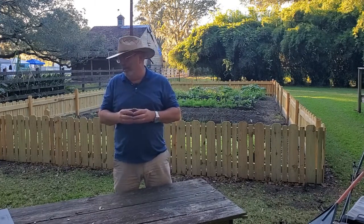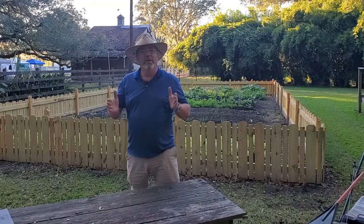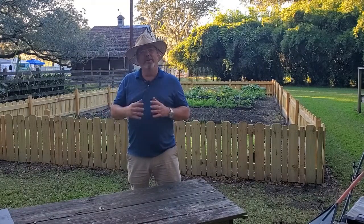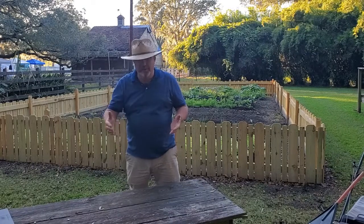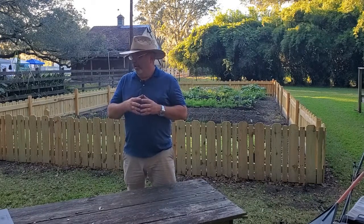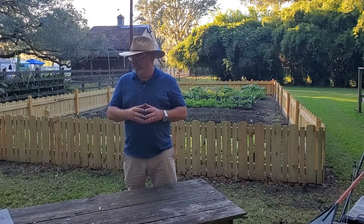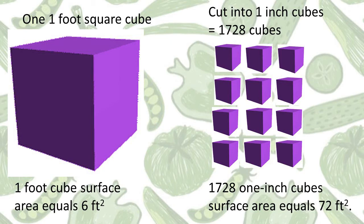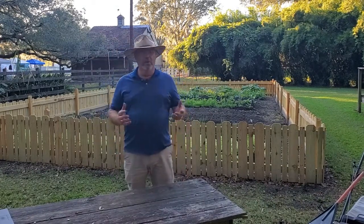This graphic gives you a representation of what we're talking about. If you have a cube that's one foot on every side, it's going to have six square feet of surface area — add water and all six square feet get wet. If you cut that cube into one-inch cubes by slicing and dicing, you'll have 1,728 cubes with a total surface area of 72 square feet. You can see the tremendous increase in surface area just by dicing things up into small cubes.